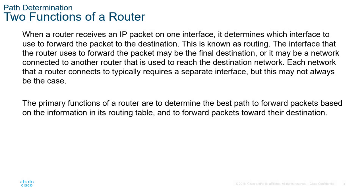Essentially, a router will receive a packet and it needs to determine how to forward that packet — what interface should that packet go out of. The process of figuring that out is known as routing. A router will have an ingress and egress port or interface, but that's not always the case. The primary function of a router is to determine the best path to forward packets based on the information in its routing table, forwarding packets toward their destination. The route table can be learned through static or dynamically learned information.